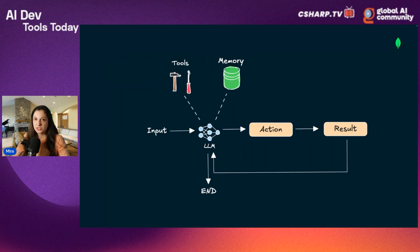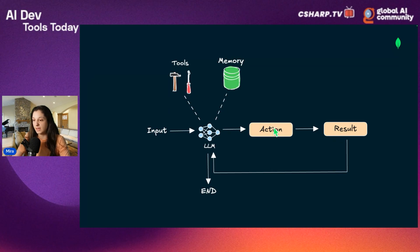This is the architecture for the agent we will build. We have input, we interact with a large language model, the model creates a plan, and then our agent executes this plan. You will see this action-and-result loop here. The action is usually calling a tool or referring to memory, and based on the result, our agent will call the LLM again and maybe repeat this process until we have a satisfying answer.